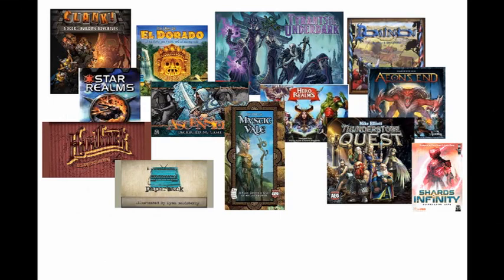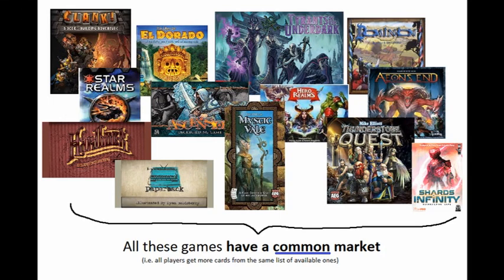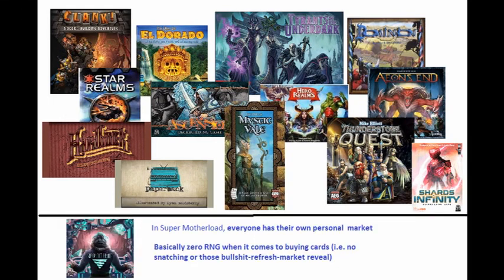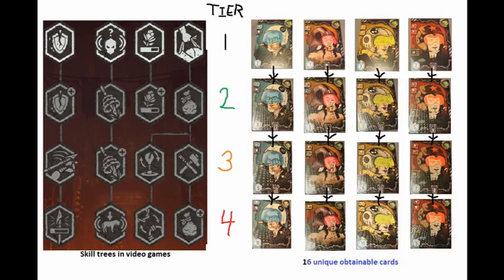So most, if not all, deck building games have a common market, right? This game, however, offers each player their own market. This then allows you to strategize in the long run and takes RNG out of the usual market system. The market looks more like a skill tree, to be honest, if you ask me, because there are four different character cards of four different tiers that you can obtain throughout the game.